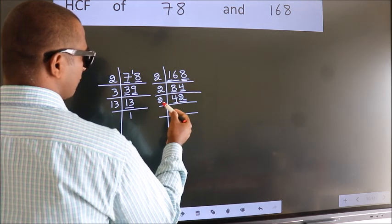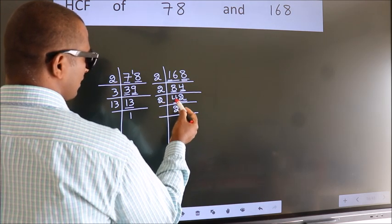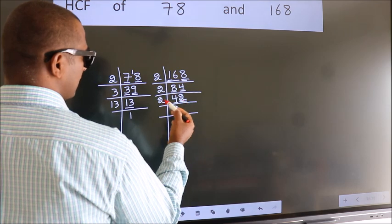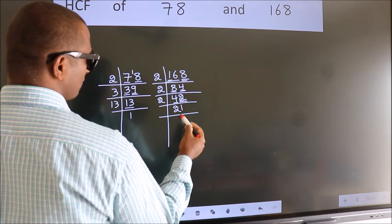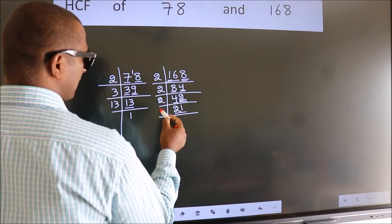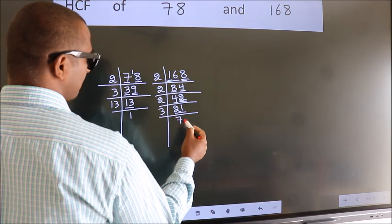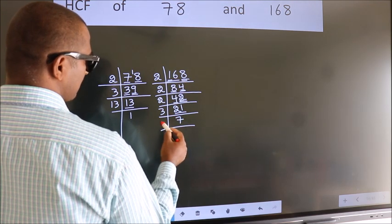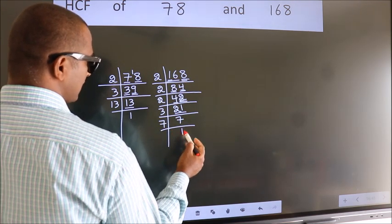First number 4. When do we get 4 in 2 table? 2 twos 4. The other number 2. When do we get 2 in 2 table? 2 ones 2. Now 21 is 3 sevens 21. 7 is a prime number, so 7 once 7.